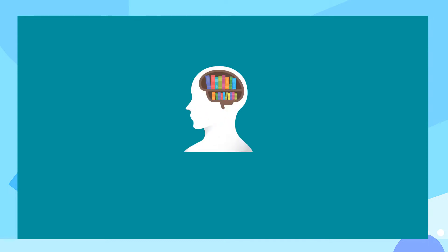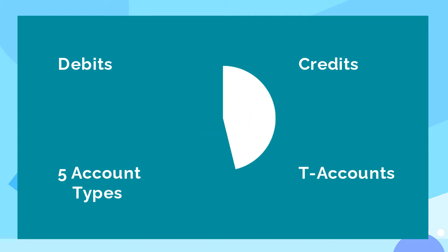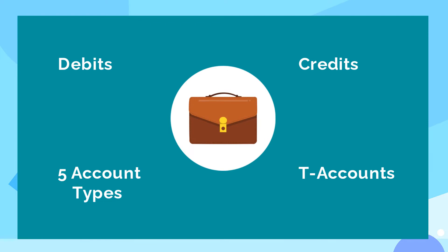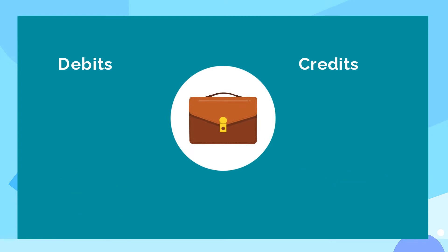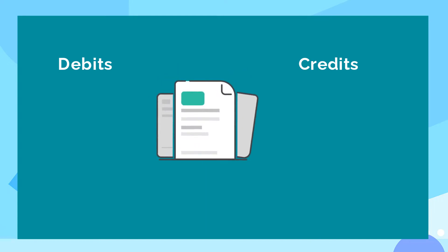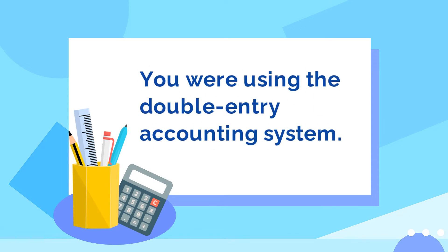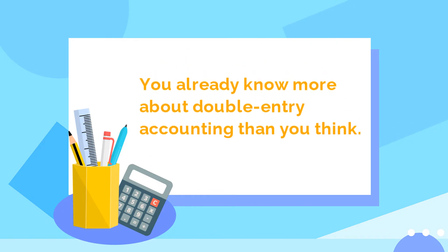So far in this series, you've learned about debits and credits, the five account types and their nature, and how to use T-accounts. You also looked at a few typical business transactions and figured out where to post the debits and credits into your set of accounts. You may not have realized it at the time, but while you were doing that, you were actually using the double-entry accounting system. That's right — you already know more about double-entry accounting than you think.